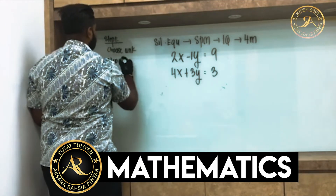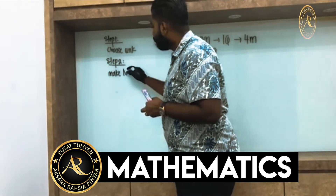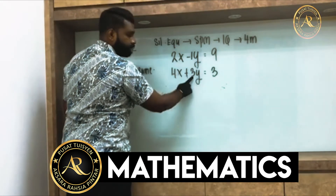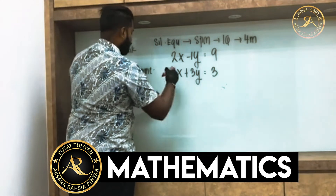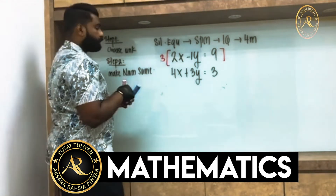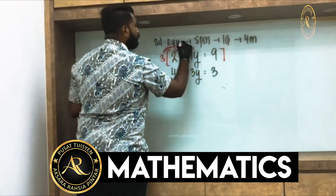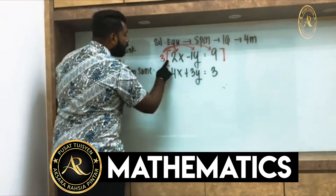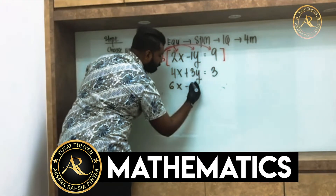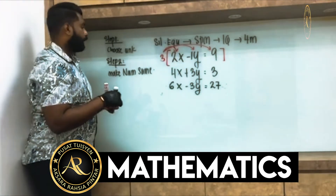Step number two: make the coefficients the same. The y coefficients are 1 and 3, so I multiply the entire first equation by 3. That gives: 3 times 2x = 6x, 3 times negative y = negative 3y, and 3 times 9 = 27. So the new equation is 6x minus 3y equals 27.